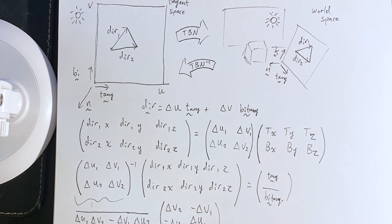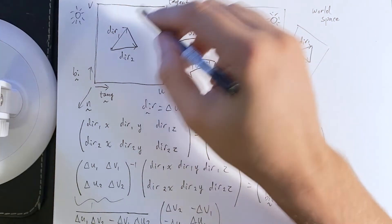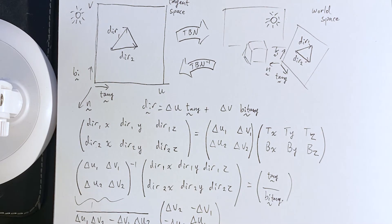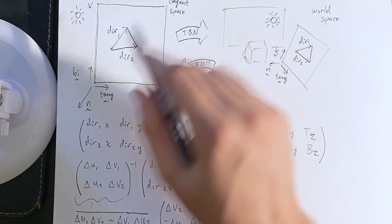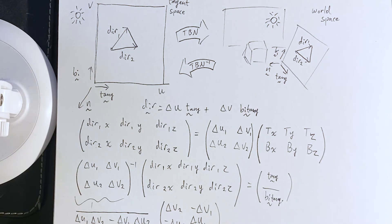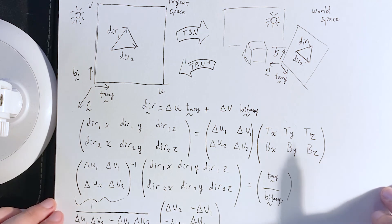Especially if we have, if we're given a normal map, we want to convert that over. We want to get all the lights relative to the normal map. Okay. And it turns out there's a really good formula.